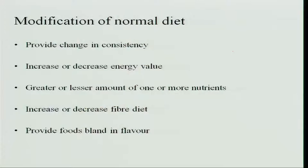How do you modify a normal diet to a therapeutic diet? You provide a change in consistency. When the person is very ill, you change the consistency to pure liquid, and then keep changing it. As the illness reduces, you bring it to a soft diet and then to a normal diet.